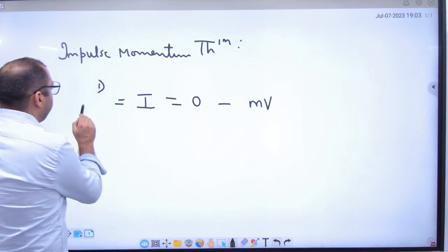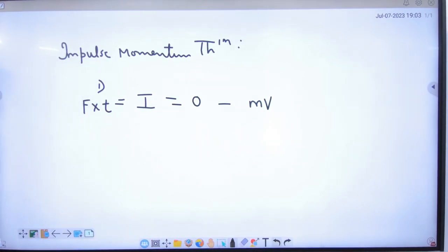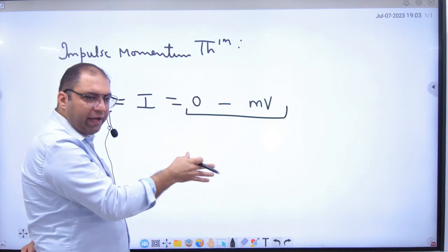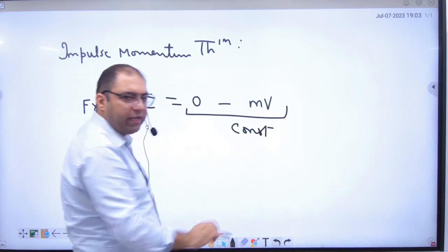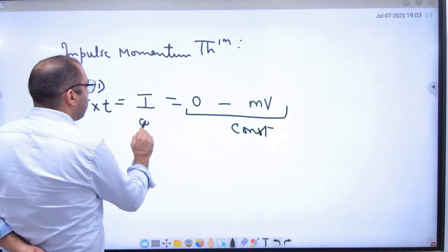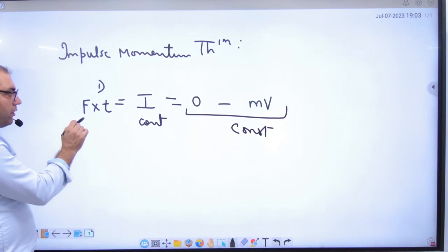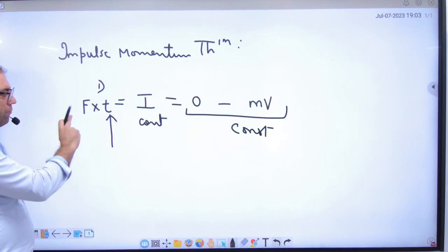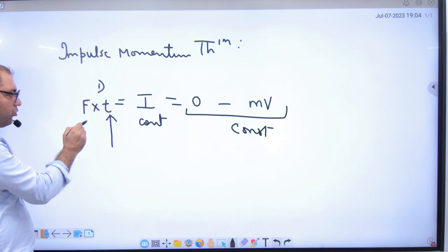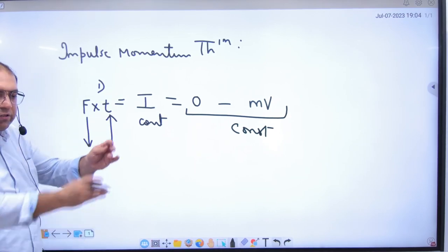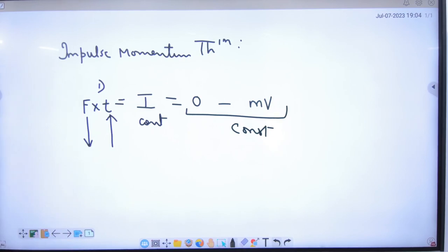Impulse होता क्या है? Force into time. तो impulse = force × time. यह term constant है — M और V हाथ में नहीं है, 0 भी हाथ में नहीं है, तो constant रहेगा। इसका मतलब impulse इस question में constant है। तो अगर वो catch करने का time बढ़ा दे — दो चीजों का product constant है, तो अगर एक चीज बढ़ेगी तो दूसरी चीज कम हो जाएगी। तो इसके हाथ पे force कम लगेगी। इसलिए वो time बढ़ाता है catch करने का, ताकि time बढ़े तो force कम हो जाए। यह पहली application है।